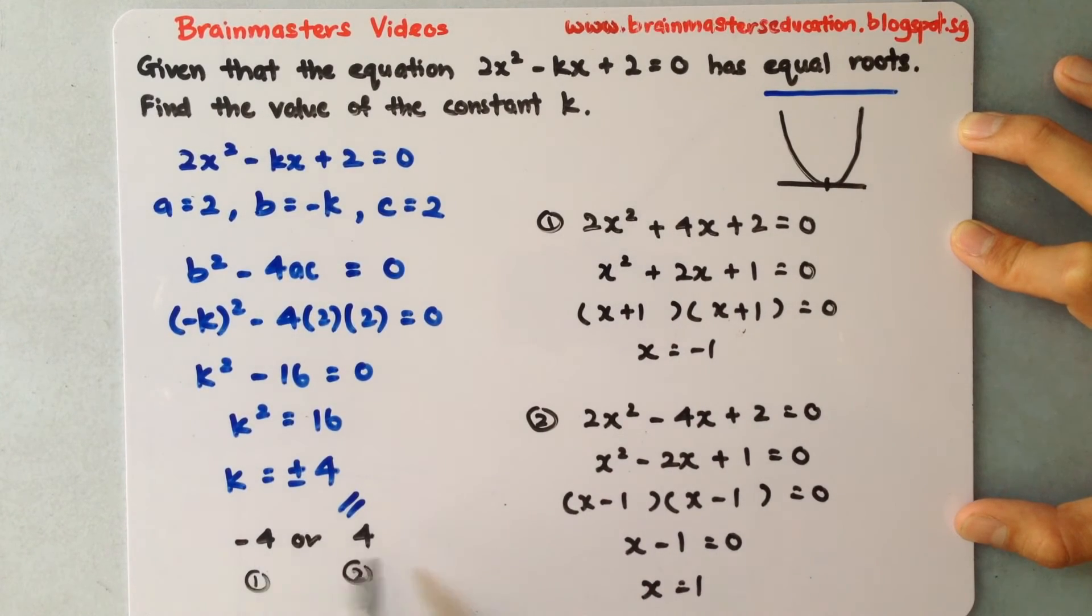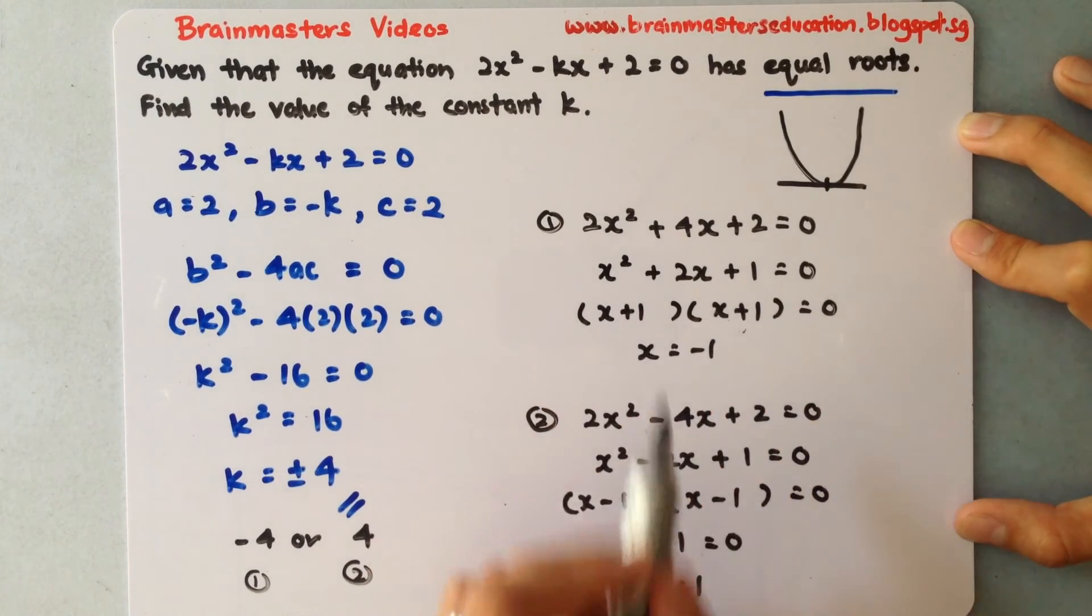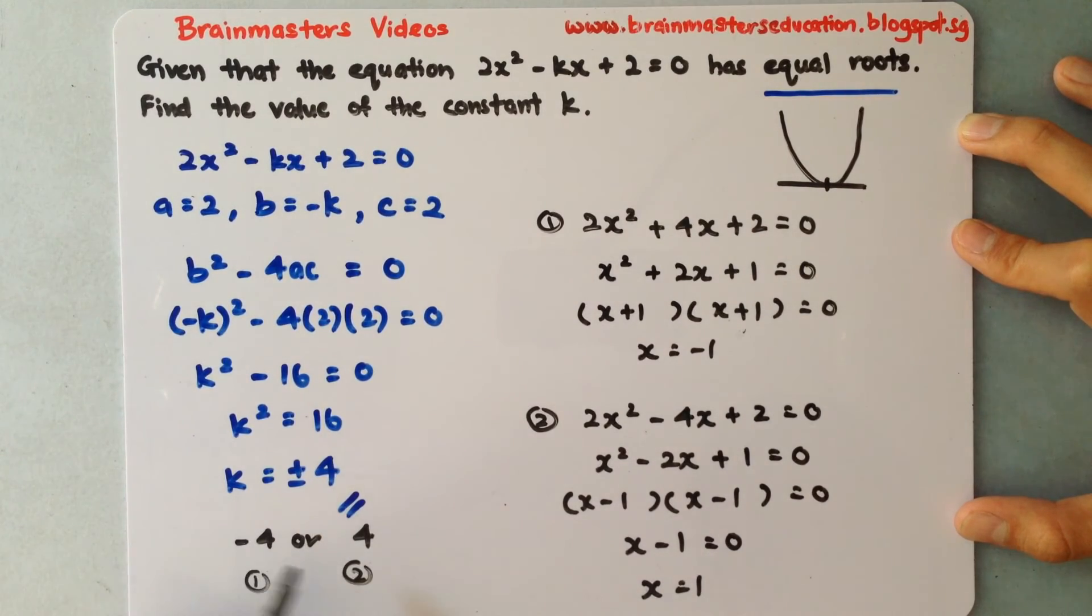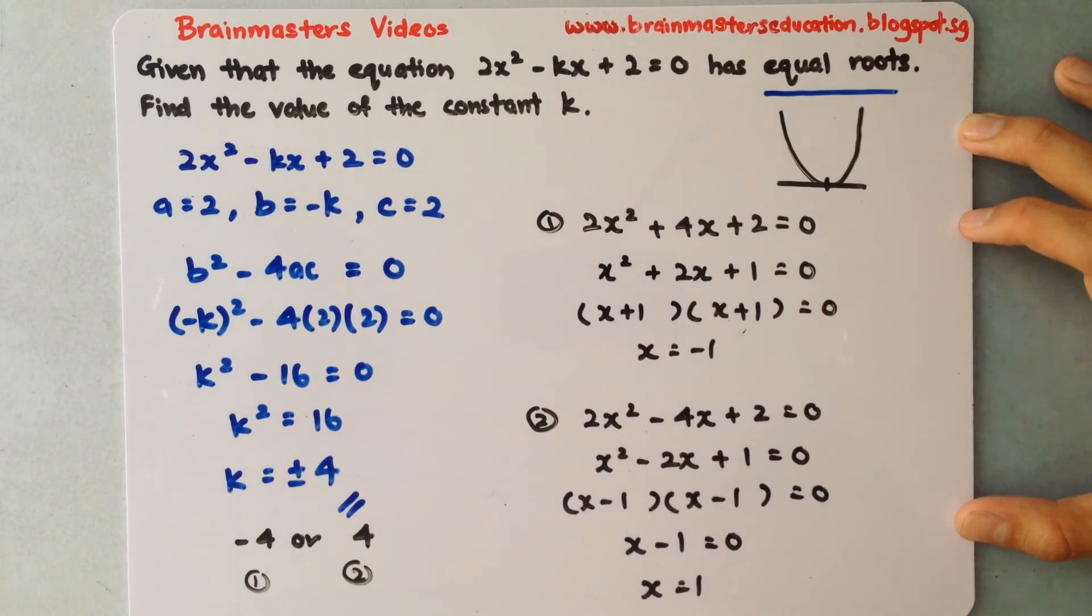So if I have these two different k's put inside, they're different equations. I'll come up to a different equation and I have only one point. So this proves that my answer is actually correct where k is negative 4 or 4. I will have only one root. So this is how you understand the question.